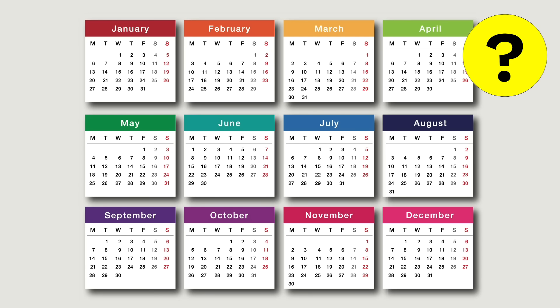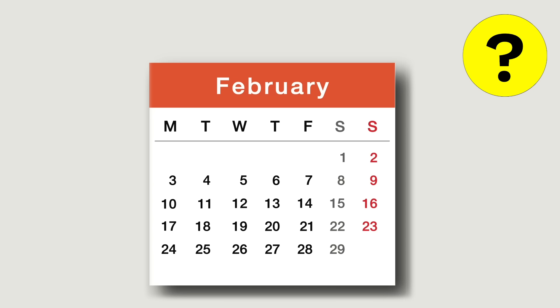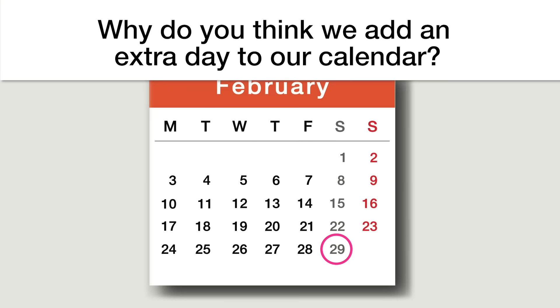I'm Sherry and I'm 11. I'm Genevieve and I'm 12. And I'm Brianna and I'm going to be seven. Why do we do this? Why do we add an extra day to our calendar once every four years?